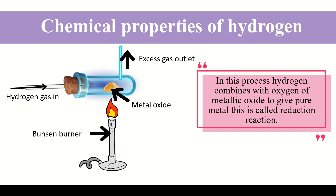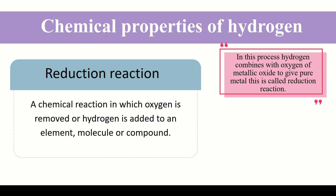In this process, hydrogen combines with the oxygen present in the metallic oxide and gives pure metal. This is called a reduction reaction because in this reaction there is removal of oxygen. A reduction reaction is a type of chemical reaction in which either oxygen is removed or hydrogen is added to an element, molecule, or compound. Since hydrogen removes the oxygen from the metal oxide, the reaction is known as a reduction reaction.